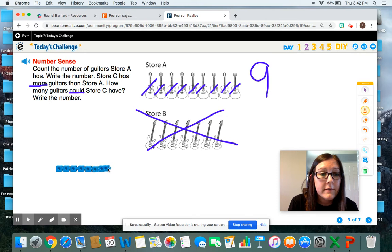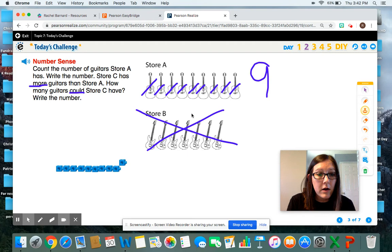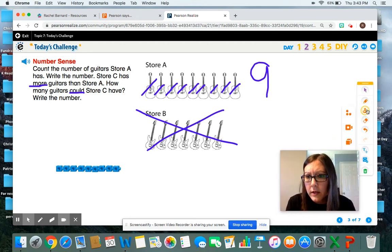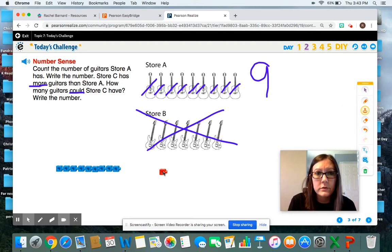Six, seven, eight, nine. There are all of the guitars that store A has. They have nine. I need to put more. Let me change colors. I'll use red for store C.